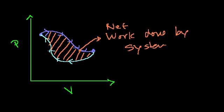Now we also know that if we're at some point on this PV diagram, our state is the same as it was before. So if we go all the way here and then go all the way back, all of our state variables will not have changed. Our pressure is the same as it was before, our volume was the same as it was before, because we went all the way back to that same point on the PV diagram.